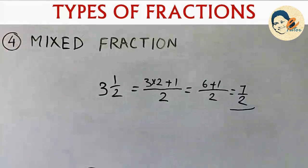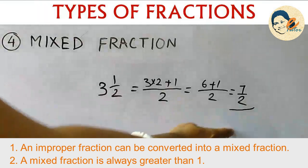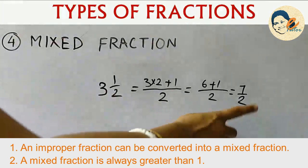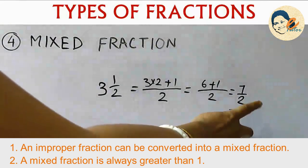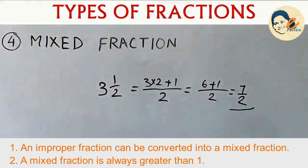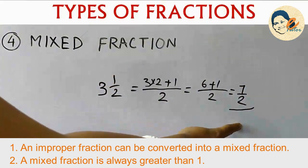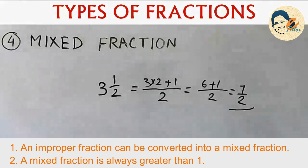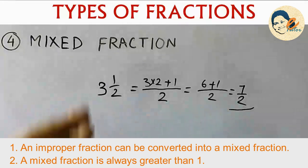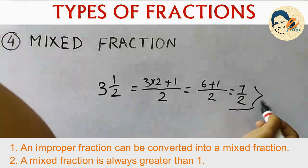Remember: an improper fraction can always be converted into a mixed fraction. To do the reverse — if an improper fraction is given, divide the numerator by the denominator to get the mixed fraction. Also, a mixed fraction is always greater than 1, because a mixed fraction is essentially an improper fraction and its value is always greater than 1.